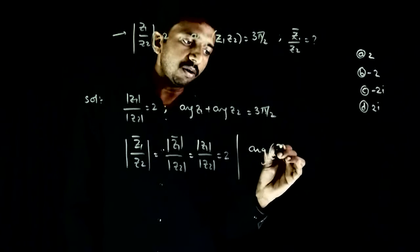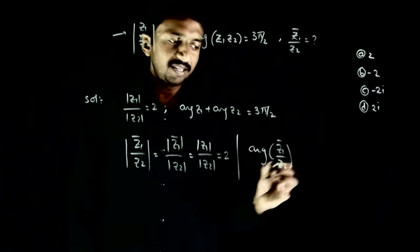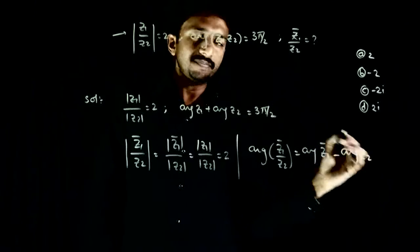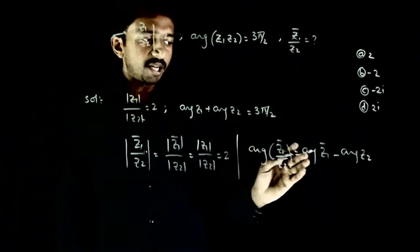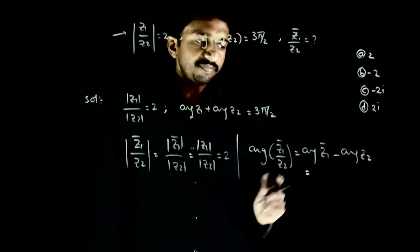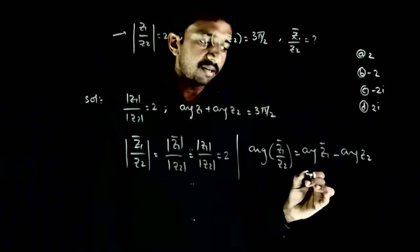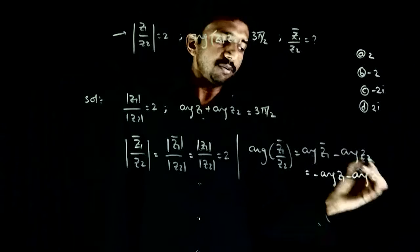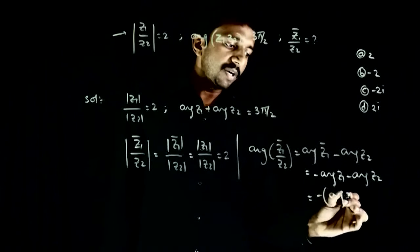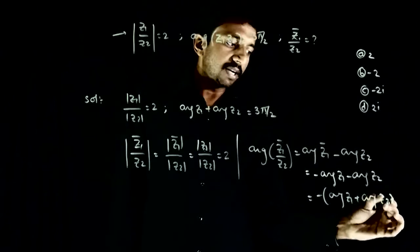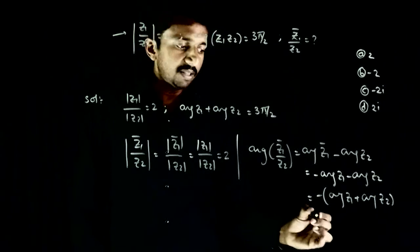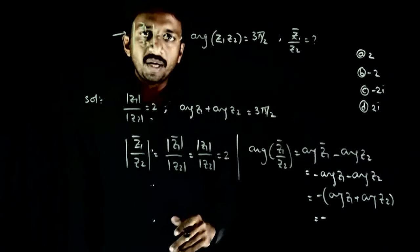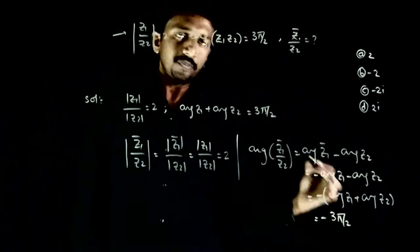Now, what is argument of z1 bar by z2? That is equal to argument of z1 bar minus argument of z2, since argument of a/b equals argument of a minus argument of b. Argument of z1 bar is minus argument of z1, so this equals minus argument of z1 minus argument of z2, which equals minus(argument of z1 plus argument of z2) = minus 3π/2.